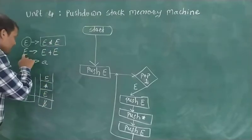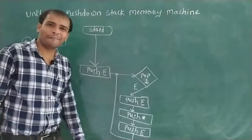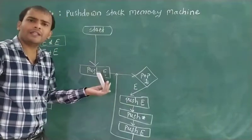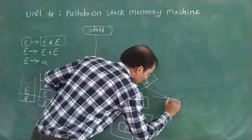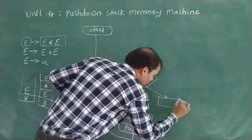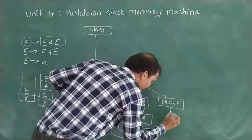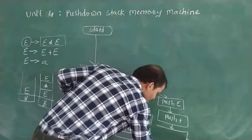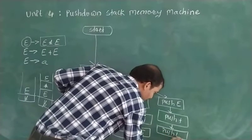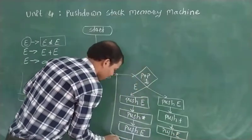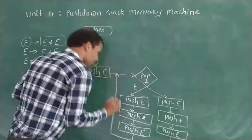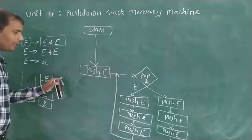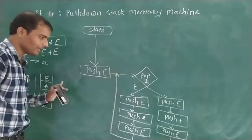If we want to replace E with E plus E, that is also possible. So from the pop state you can push E, plus, and E onto the stack and come back to the pop state. So you can push either E plus E or E star E depending on which production rule you apply.